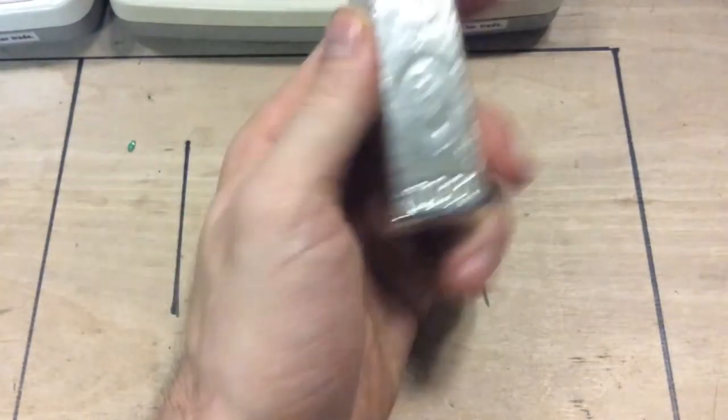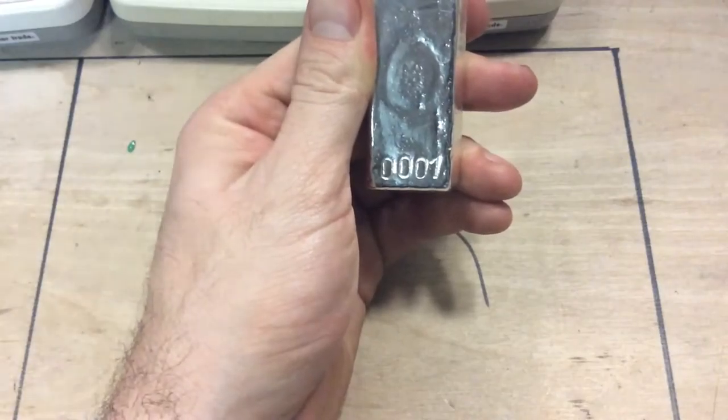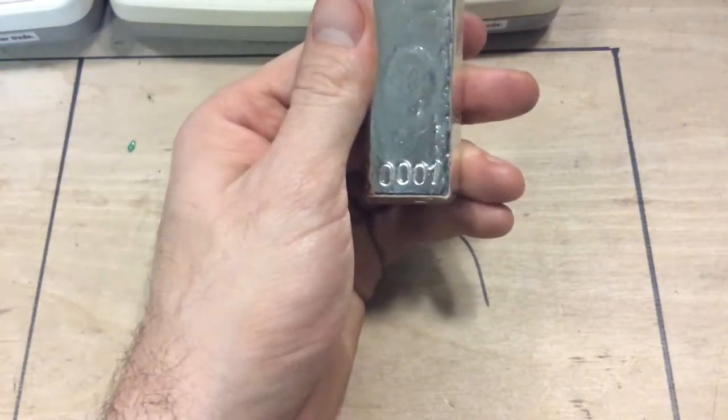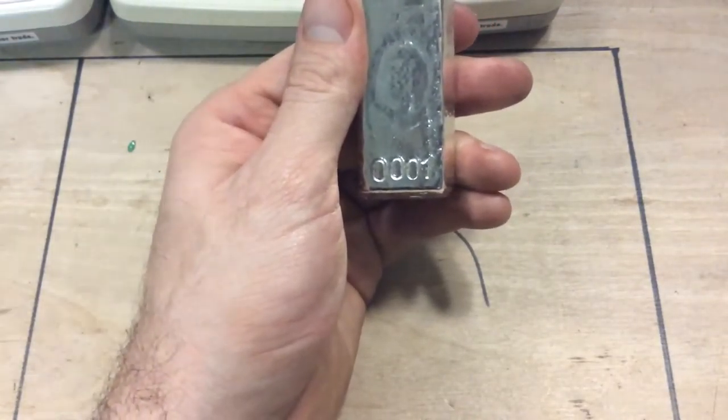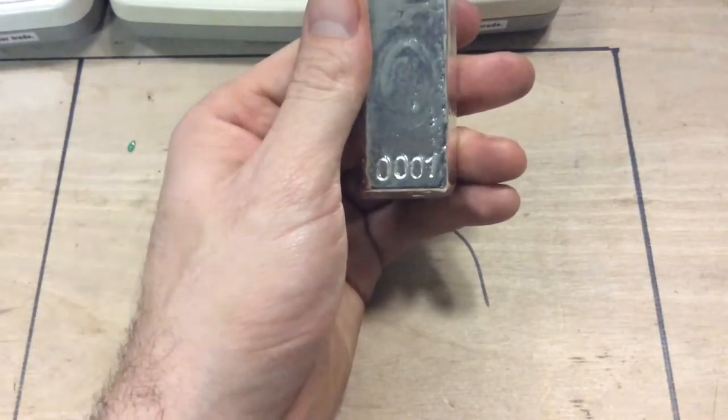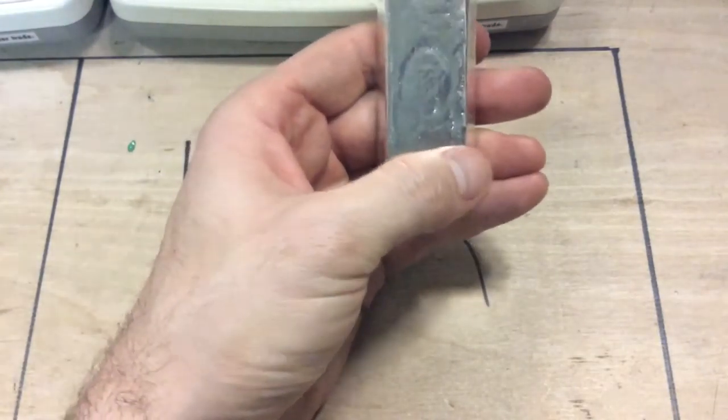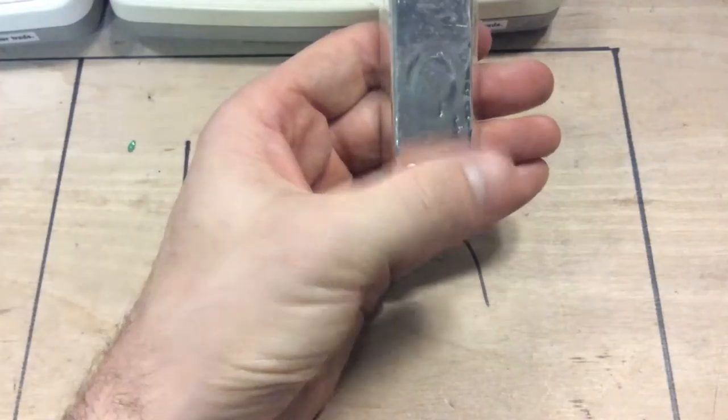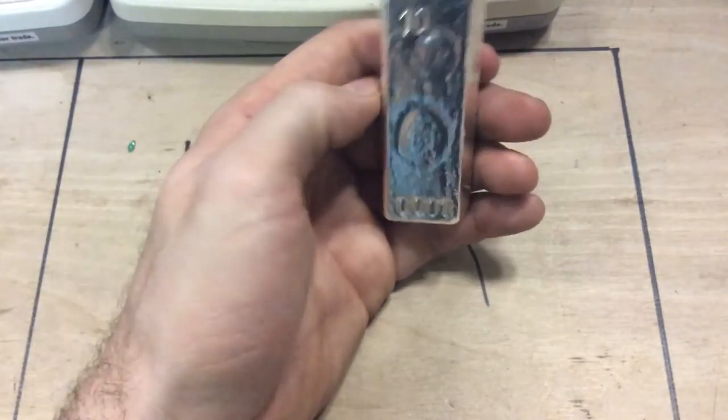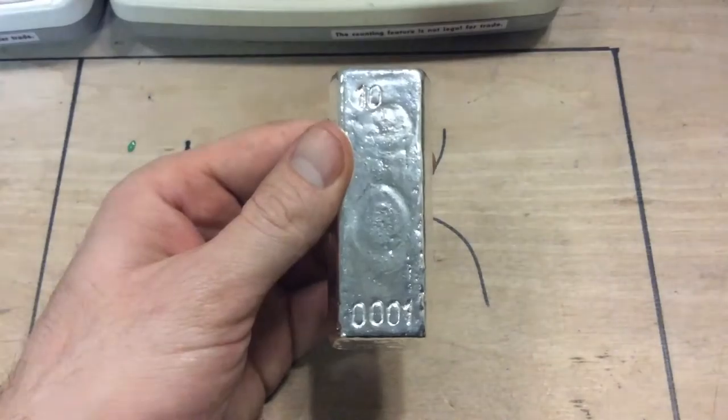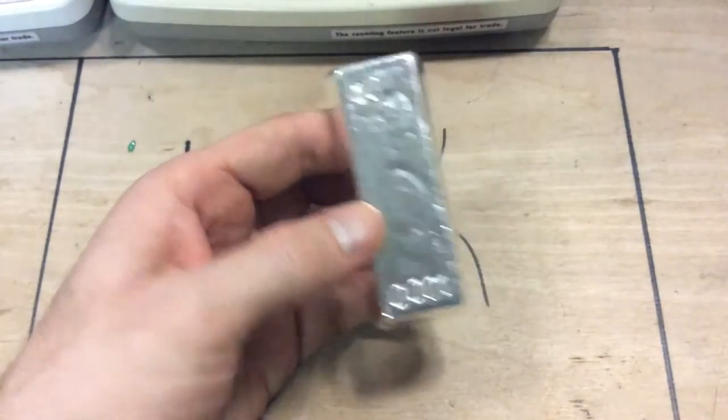I'm actually going to serial number them. So this would be bar number one. Obviously, I'm not going to use this one - I'll probably remelt it - but this is just an example test run. Any bar over one ounce I'm going to serial number and deliver with a certificate of authenticity when I sell it.